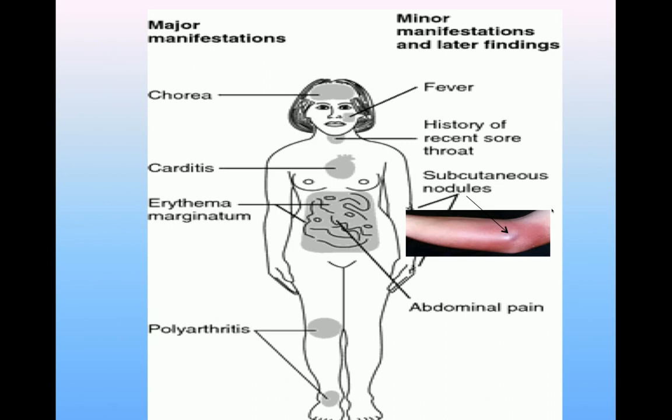Minor manifestations include fever and a history of recent sore throat in the previous six months. The patient also develops subcutaneous nodules formed beneath the epidermis with inflamed overlying skin, and these nodules are related to carditis — patients who develop carditis also have subcutaneous nodules.